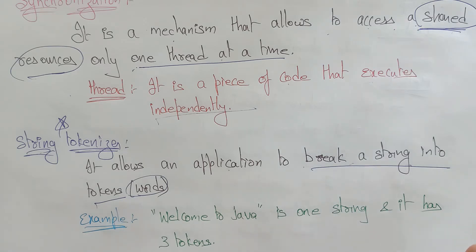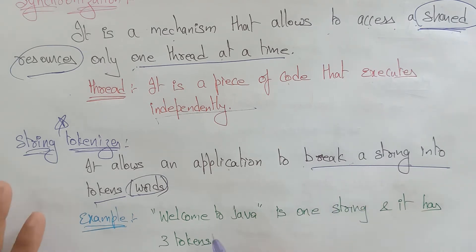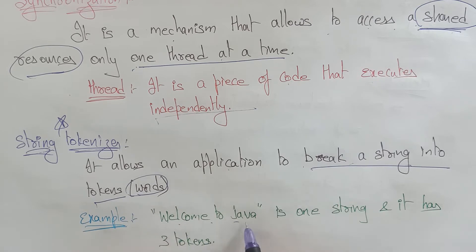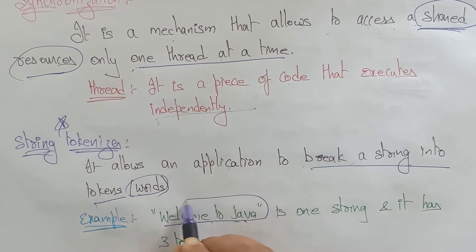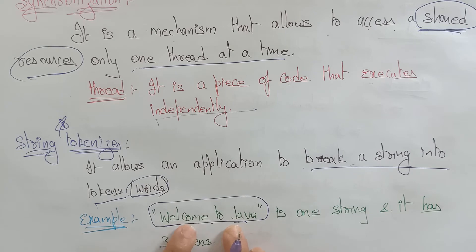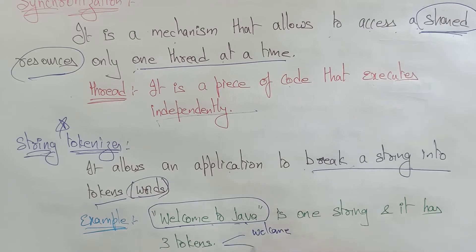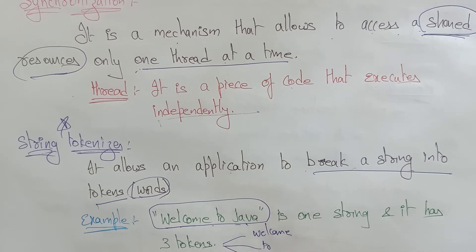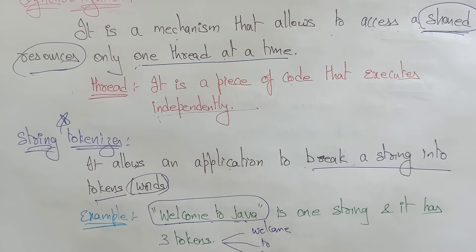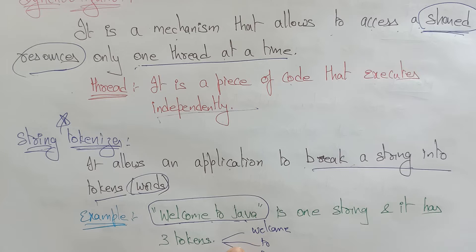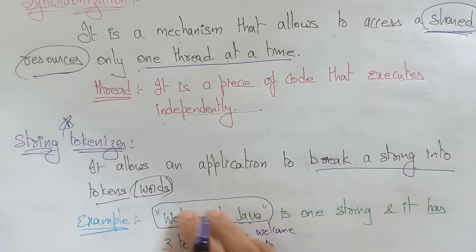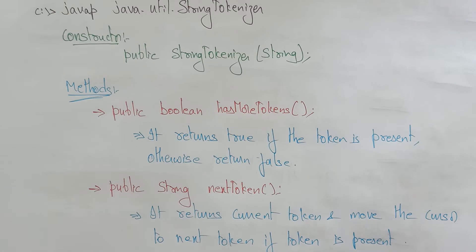For example, 'welcome to java' is one complete string. It has three tokens: 'welcome', 'to', and 'java'. So a String Tokenizer allows an application to break a string into tokens — that is the role of the String Tokenizer.